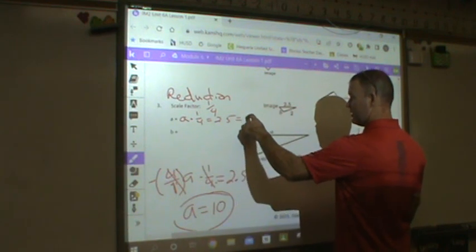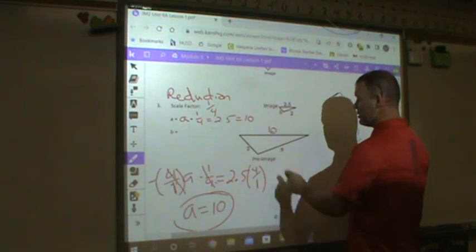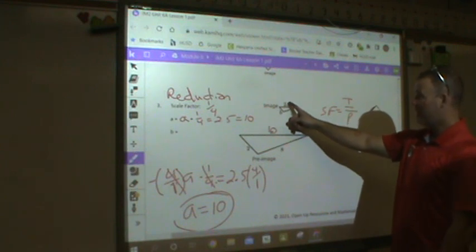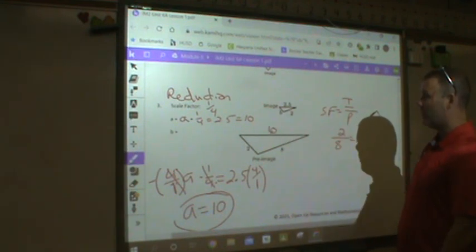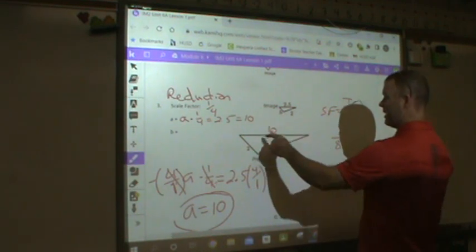2.5 times 4 is going to give me 10. So, therefore, this is equal to 10. Is that reasonable? If I take 2.5 and multiply it by 4, do I get 10? Or if I take a fourth of 10, do I get 2.5? Yes.